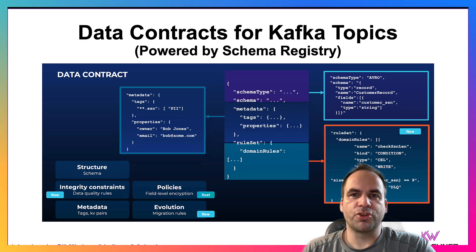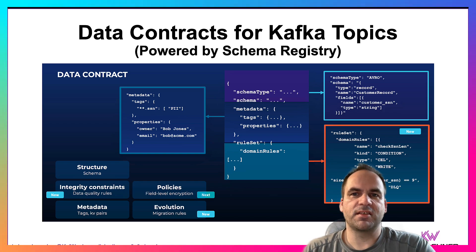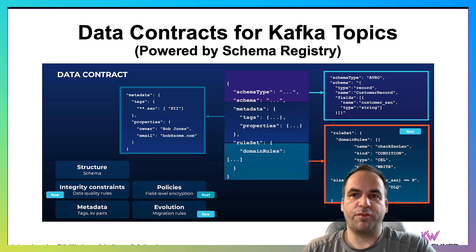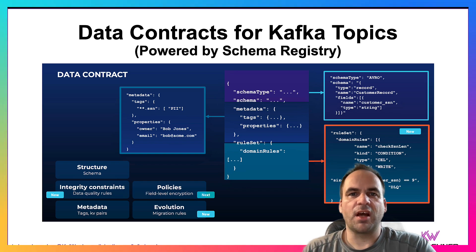First of all, if you build a new Kafka project, you actually should never start without schemas. The schema registry is the foundation of most critical Kafka projects because you define the structure and the metadata of the messages, and with that you can ensure good data quality. This is also the foundation for good data governance across end-to-end data pipelines. This is an example of a data contract we built with Confluent, where you can configure data contracts with schemas, additional rules, integrity constraints, and policies — but you could do the same with other schema registries.